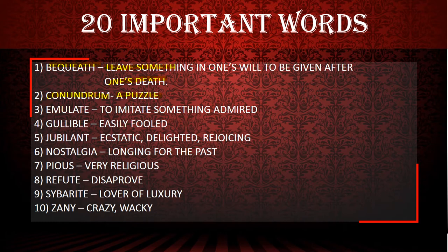Emulate means to imitate something admired. The meaning of emulate is: if I have done something good and achieved something, and another person also wants to do the same thing I have achieved, that is known as emulate.